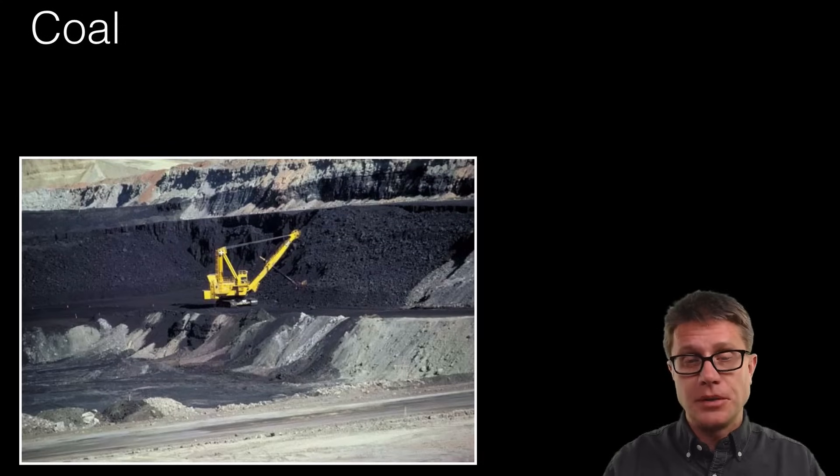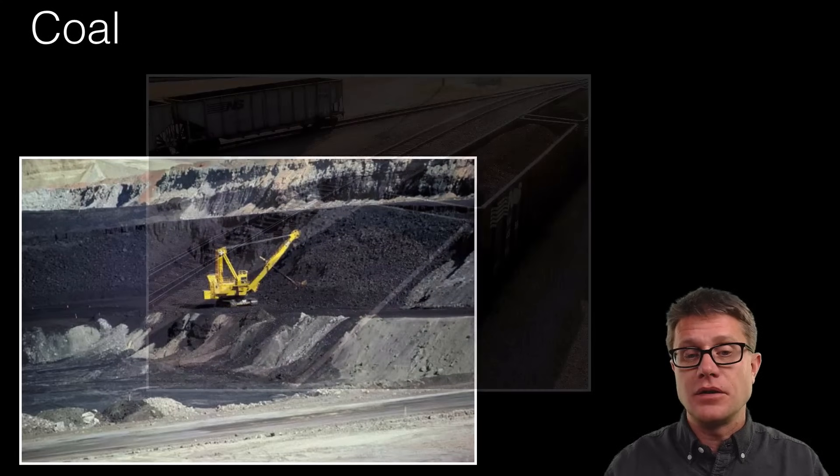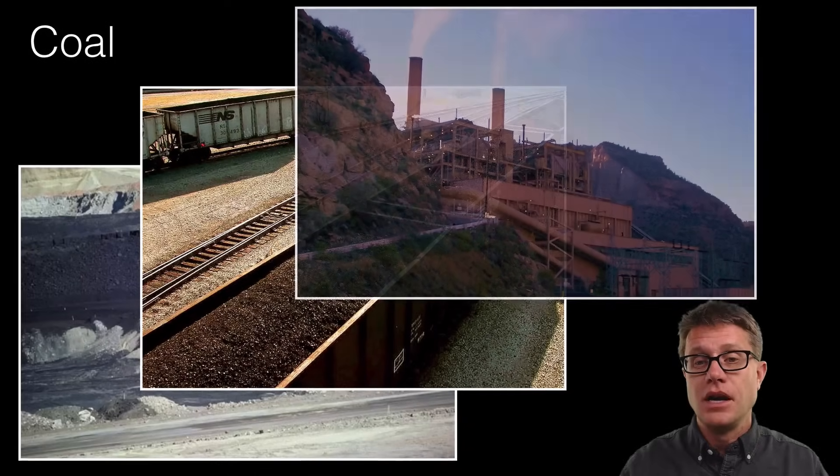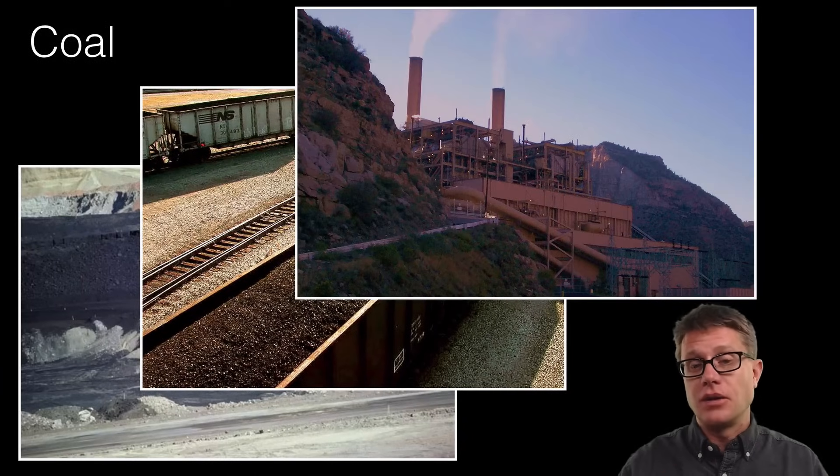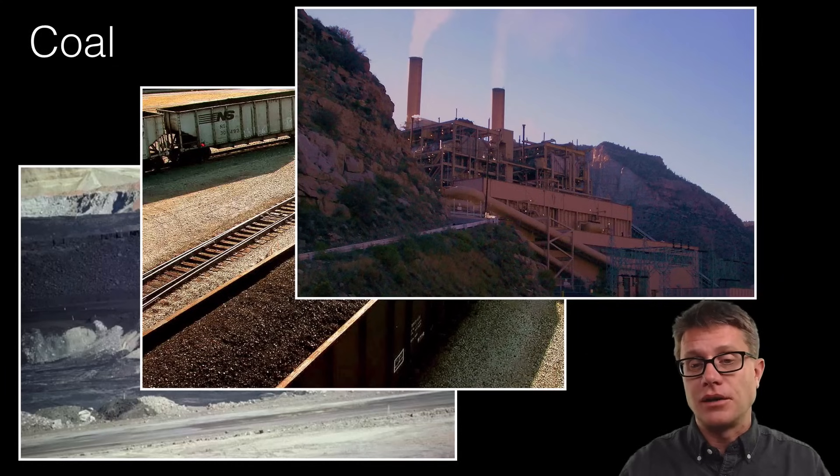So how do we use coal? You simply dig it up on the surface on these huge strip mines and sometimes underneath the surface. Then we move it where it needs to be, and then we combust it. It generates a huge amount of steam, and then we can generate electricity. This is a huge power plant down in Utah.